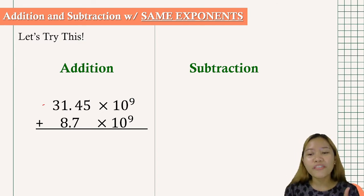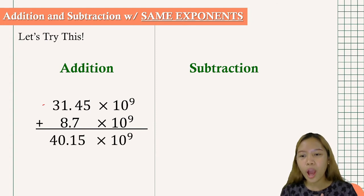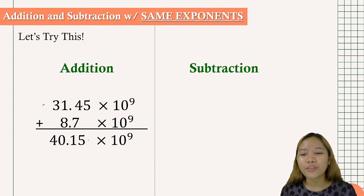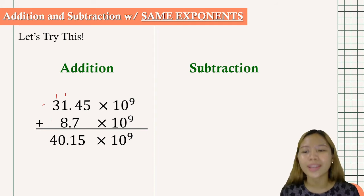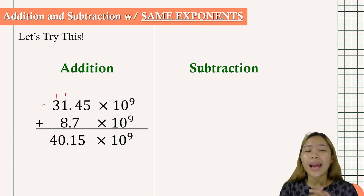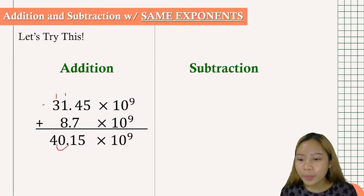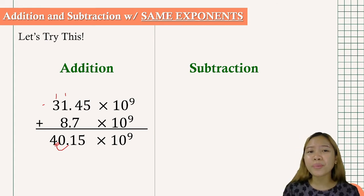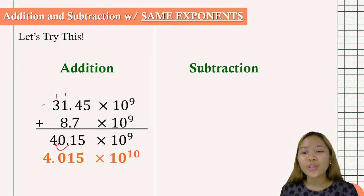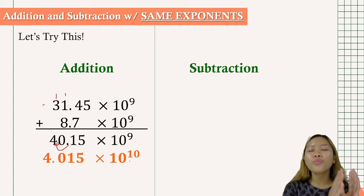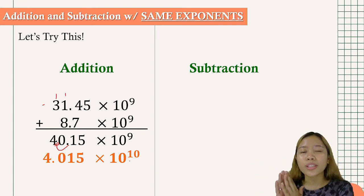Let us add these values: 31.45 plus 8.7 equals 40.15. So 5 stays; 4 plus 7 is 11, carry 1; 1 plus 1 plus 8 equals 10, carry 1; giving 40.15 times 10 to the 9th. For the final answer, we move one place to the left, so it becomes 4.015 times 10 to the 10th. Remember: moving to the left means adding to the exponent; moving to the right means subtracting from the exponent.